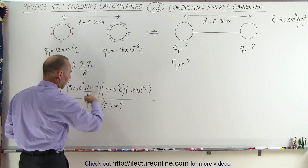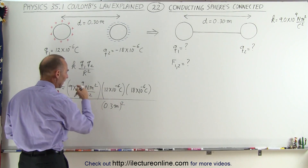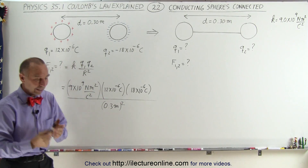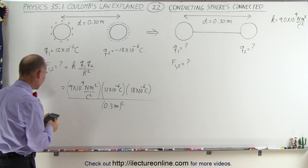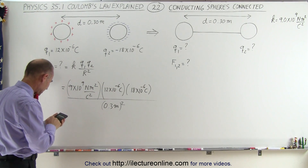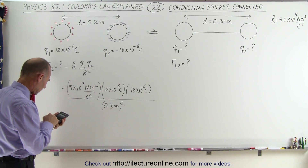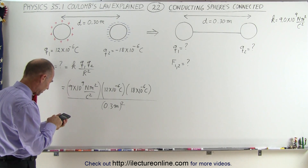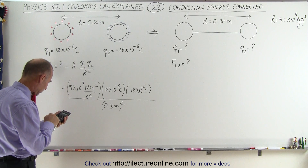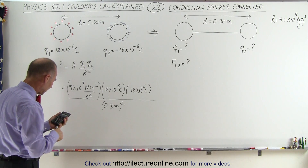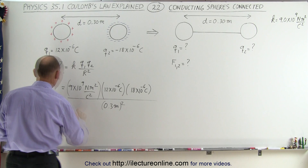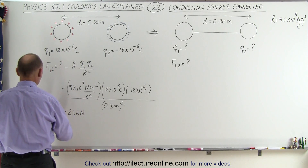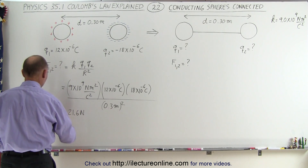Notice that the coulombs cancel out, the meters cancel out, and you're just left with newtons — the magnitude of the force. In the calculator, we have 9e9 times 12e-6 times 18e-6, divided by 0.3 squared, and we end up with 21.6 newtons. That's the magnitude of the force between those two charges.